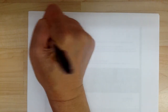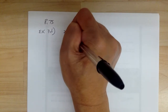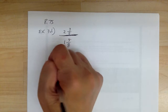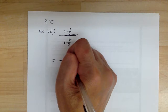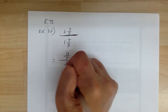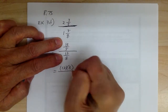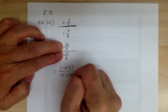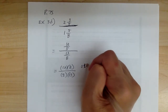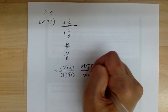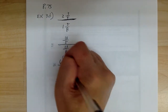Let's go to example 3D. You have 2 and 3 fifths divided by 1 and 5 eighths — mixed numbers. You need to convert them into improper fractions: 2 and 3 fifths gives you 13 over 5, and 1 and 5 eighths gives you 13 over 8. Using the outer over inner technique: outer gives 13 and 8 on top, inner gives 5 and 13 on the bottom. Notice 13 and 13 cancel out, so the answer is 8 over 5.